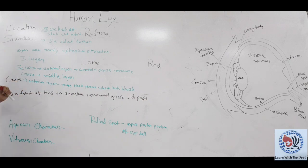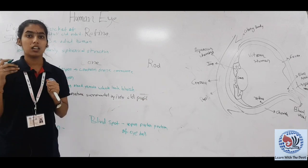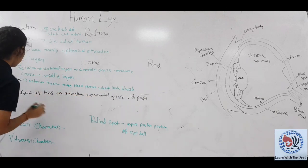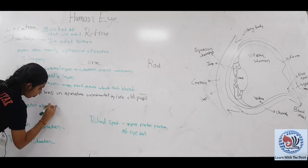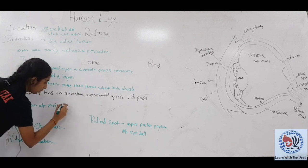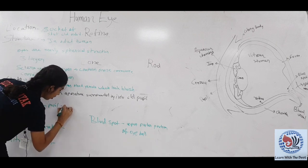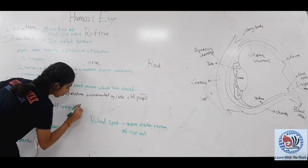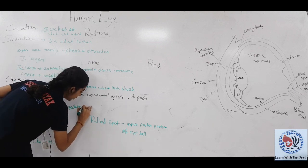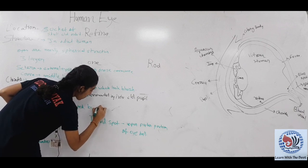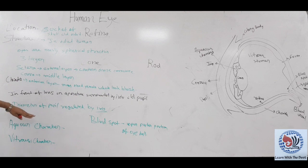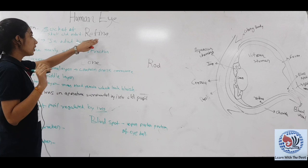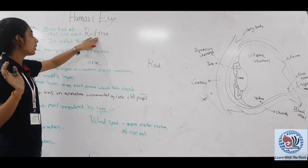The diameter of pupil is regulated by iris. In the interior part of the eyes, retina is present.